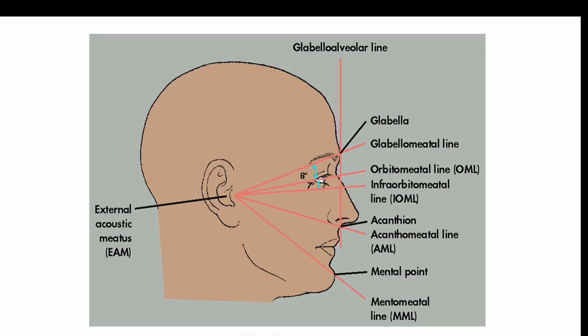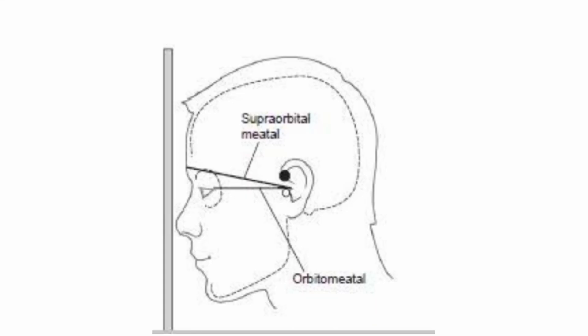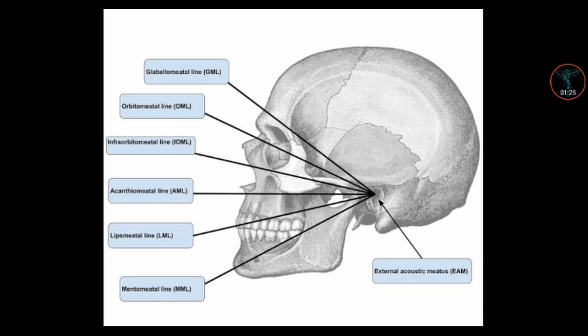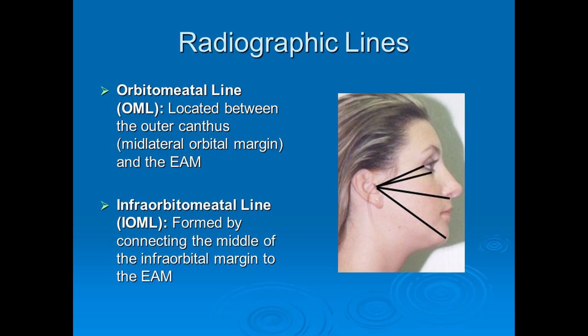Our next line is the OML, the orbitomeatal line. It passes through the outer canthus of the eye and the center of the external auditory meatus. Our next line is the infraorbitomeatal line — an imaginary line drawn between the infraorbital margin and the external auditory meatus.